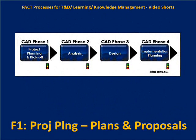In a curriculum architecture design project we use four phases to structure the overall project. This can change — there have been times when the analysis and design phases were combined into one phase simply because there was going to be only one gate review meeting, which is what the upside-down traffic lights represent. Those are go-lights, not stop-lights, which is why they're upside-down.